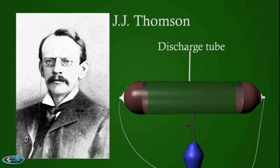In 1897, J.J. Thomson conducted the famous discharge tube experiment by passing electricity at high voltage through a gas at low pressure.